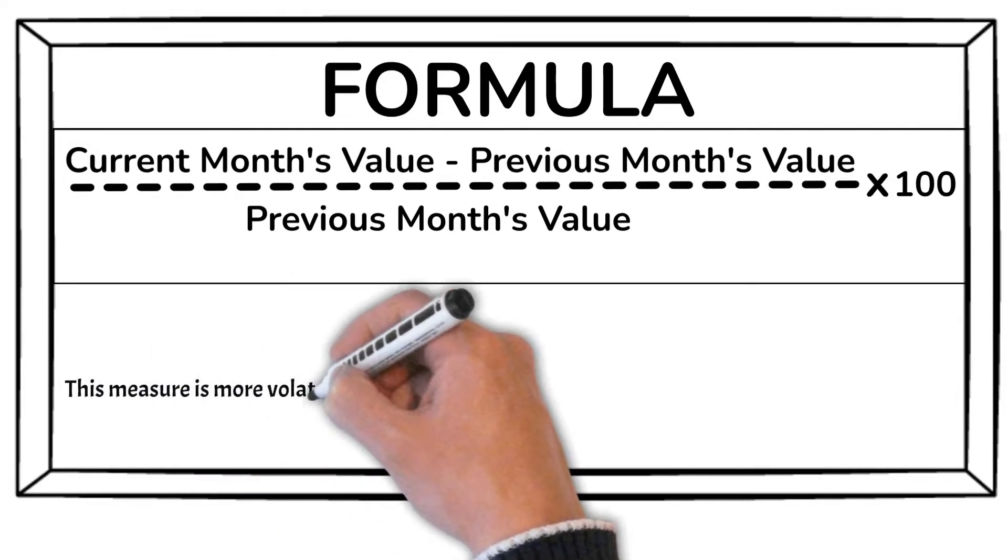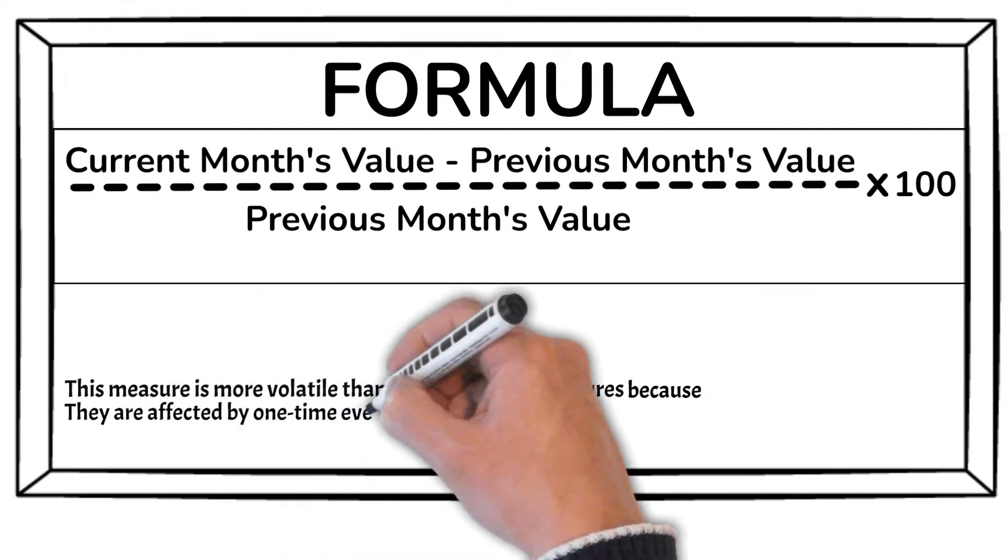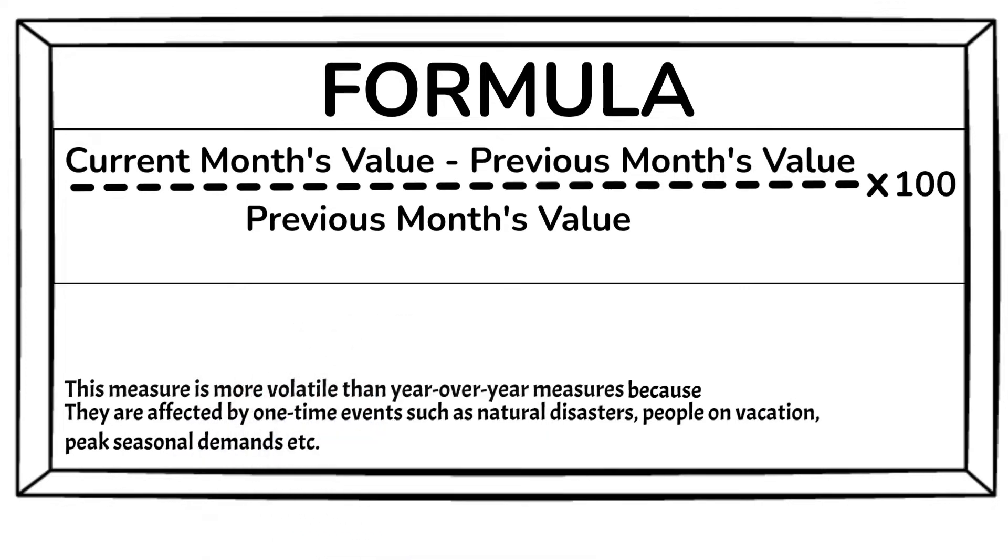This measure is more volatile than year-over-year measures because they are affected by one-time events such as natural disasters, people on vacation, peak seasonal demands, etc.